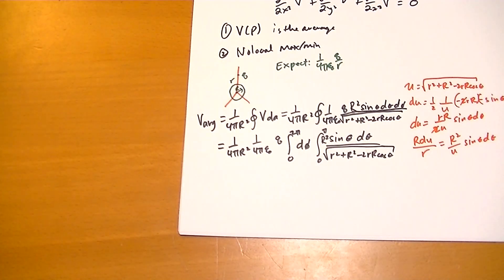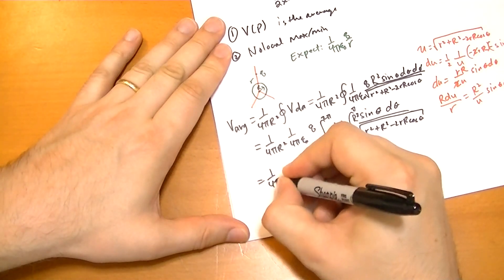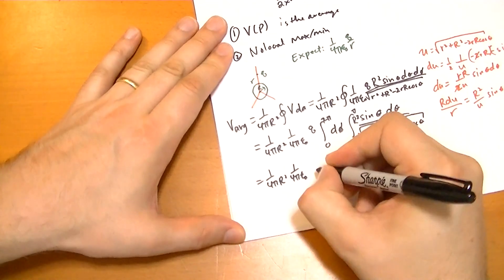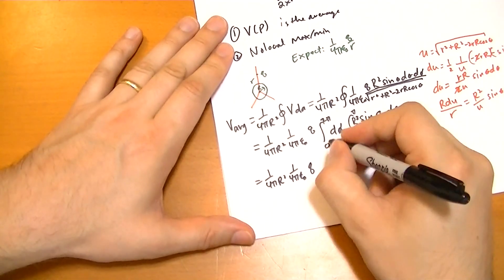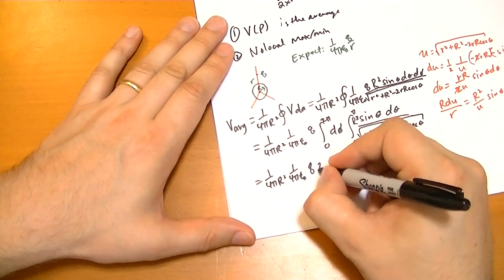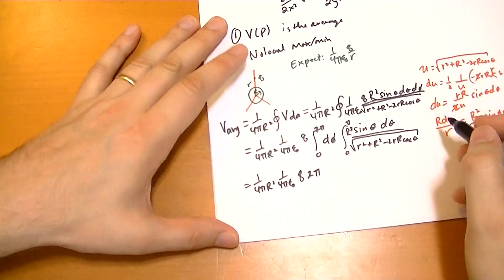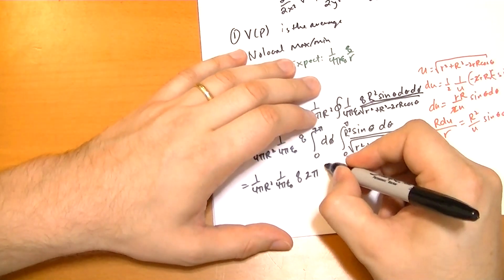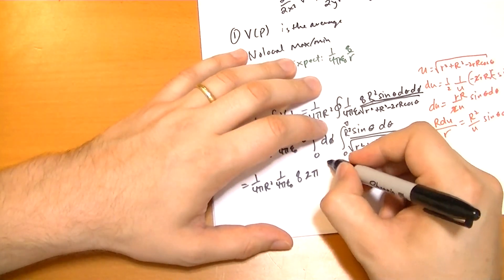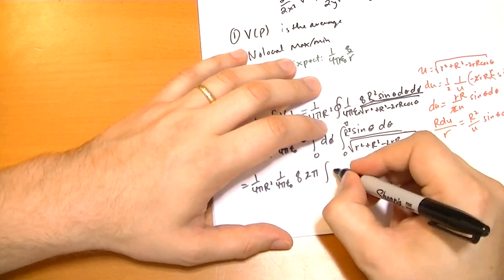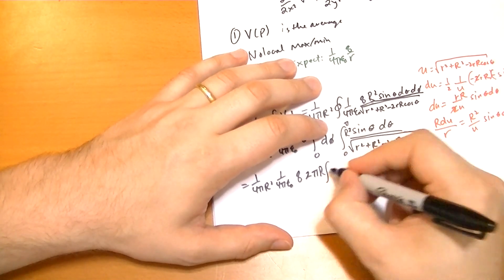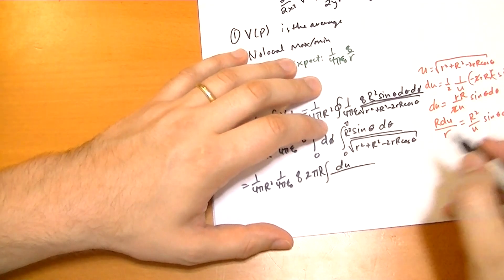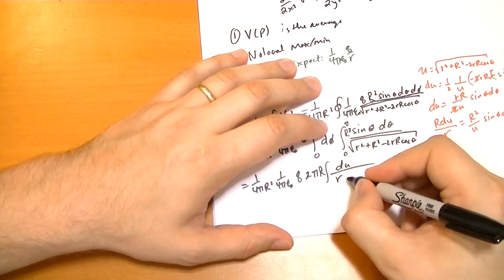Q, integral from 0 to 2 pi of phi is 2 pi. And then we have 1 over rR du over u. So r and R can be pulled out, little r can't be. So we have r, let's pull out the r. So we have 1 over rR times du over u.